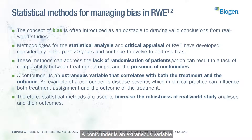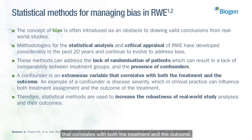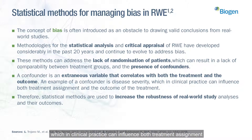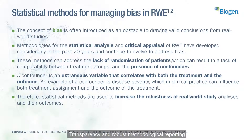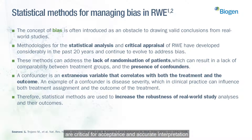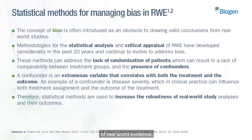A confounder is an extraneous variable that correlates with both treatment and the outcome. An example of a confounder is disease severity, which in clinical practice can influence both treatment assignment and the outcome of the treatment.